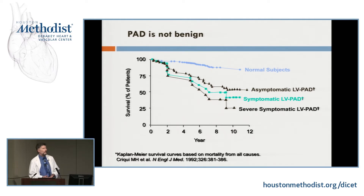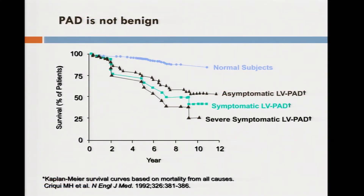This disease is not benign. A nice study by Michael Krieki, an epidemiologist in San Diego who's been studying PAD patients for years, confirmed by subsequent studies, showed that having a low ankle brachial index — low pressure at the ankle due to arterial occlusive disease — is a separate and distinct risk factor from the Framingham risk factors. It adds to the predictive value of the Framingham factors. It's an independent risk factor.